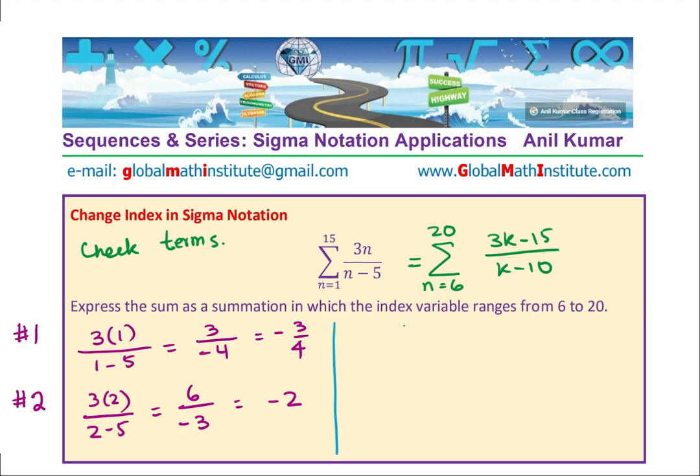Now, let us do the same using the new expression. So, I am using the different color, green for the second one. So, the first term will be for n equals to, I should write k equals to. So, k equals to 6. So, we get 3 times 6 minus 15 over 6 minus 10 and that gives you 18 minus 15 over minus 4 or minus 3 over 4. So, it matches. You see that? So, that means the result is perfect.